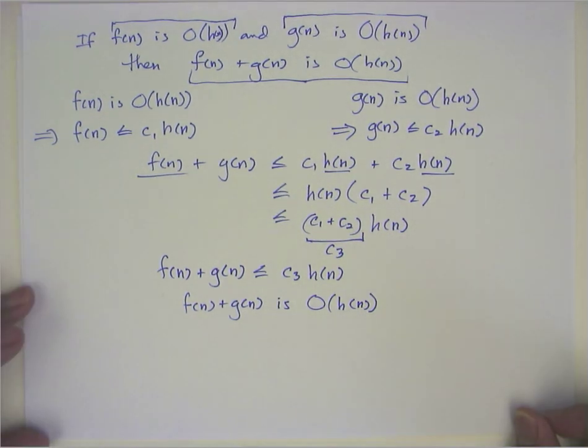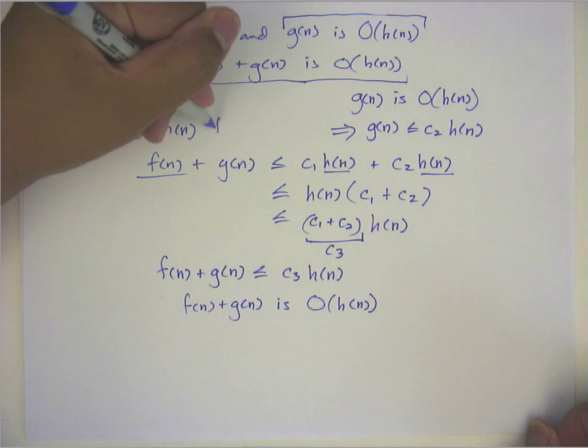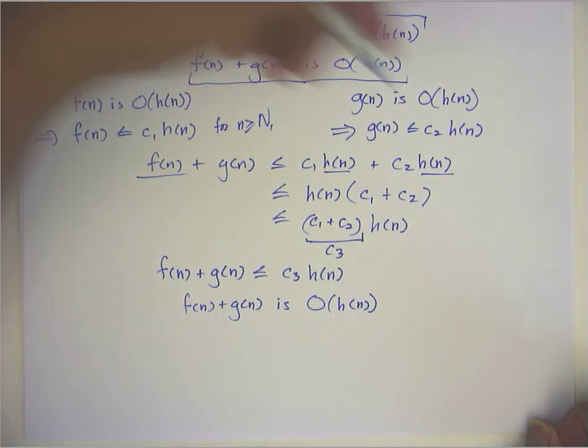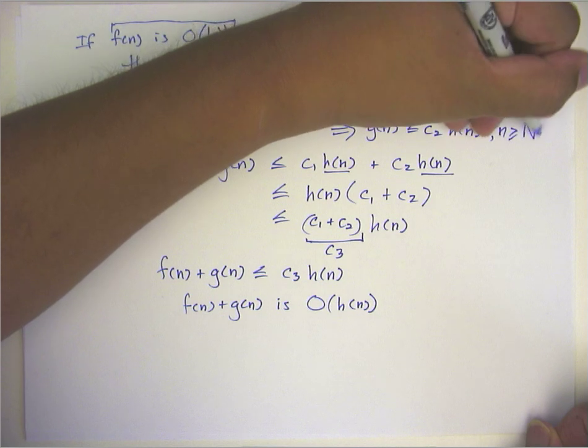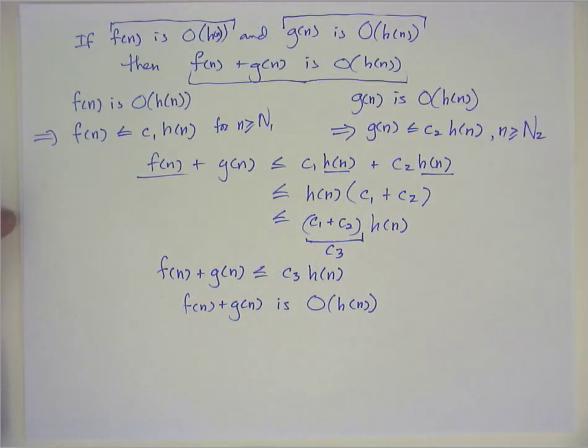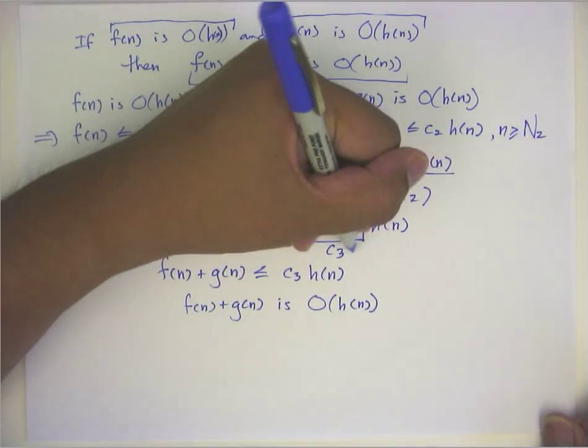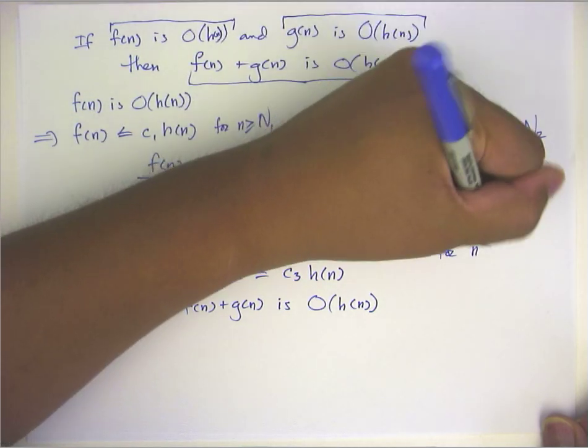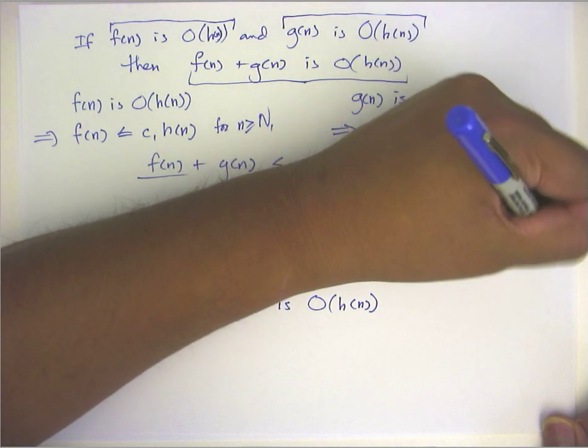Now there's a little bit of housekeeping on this proof that I missed. I needed to also include here that this is for n greater than or equal to n1. This is for n greater than or equal to n2. And then when I finally choose c3 here, this is going to be for n greater than or equal to the maximum of n1 and n2.